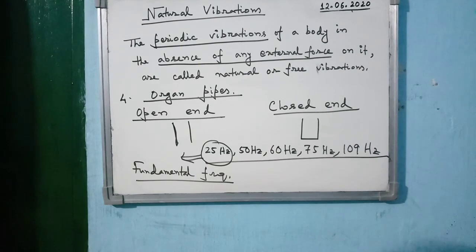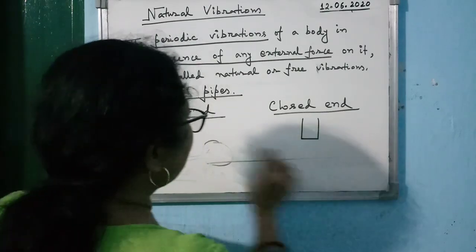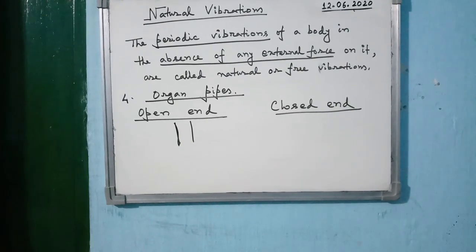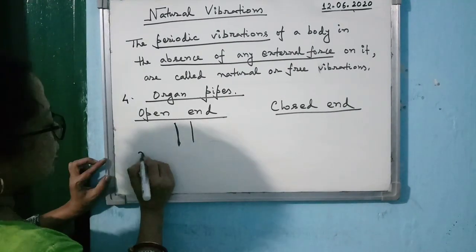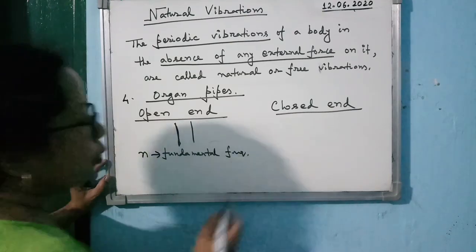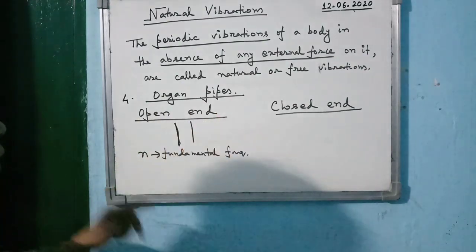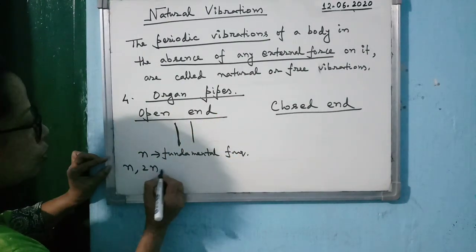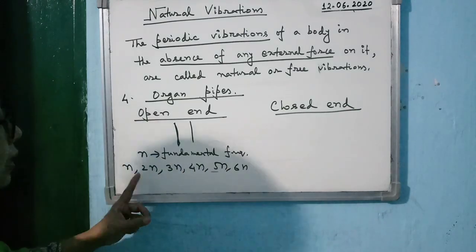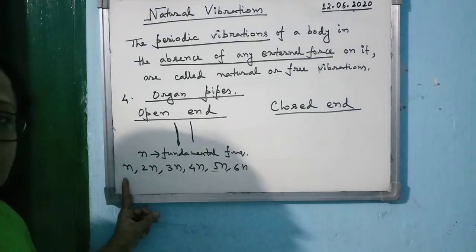In the case of an open-end organ pipe, if N is the fundamental frequency — the lowest frequency — then the other frequencies present in the sound are N, 2N, 3N, 4N, 5N, 6N, and so on. The frequencies are always multiples of the fundamental frequency.